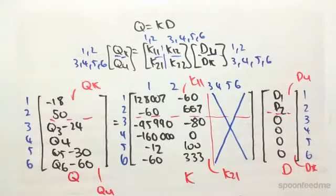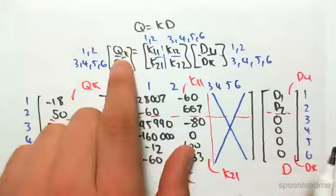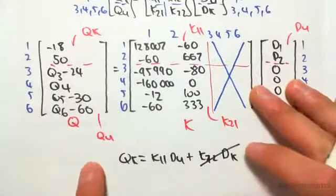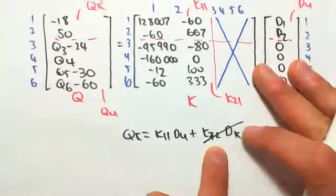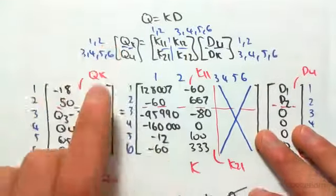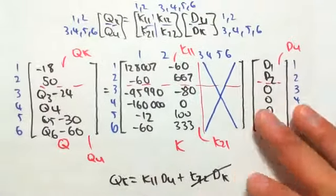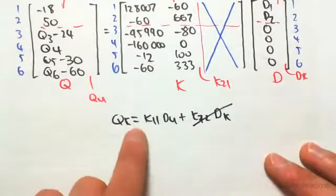Hey guys, I'm continuing from the previous video. We're now finding the unknown displacements by expanding this first matrix out. We have Q known equals K11 D unknown plus K12 D known. Multiplying this row by this column gives us Q known. The D known matrix entries are all zeros, which eliminates those terms, leaving us with this.